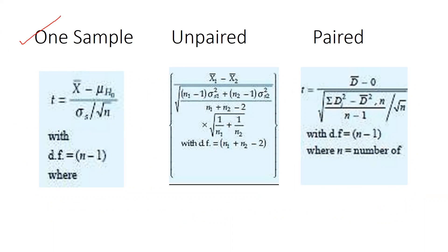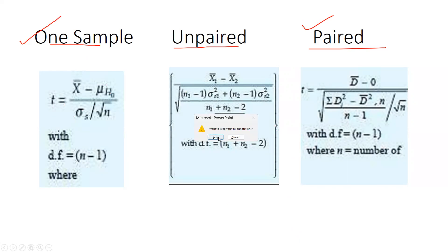To summarize: for a single sample we apply the simple one-sample t-test formula; when there are two different samples we apply the unpaired t-test; and when there is a single sample and we want to check before and after (pre and post), we apply the paired t-test.